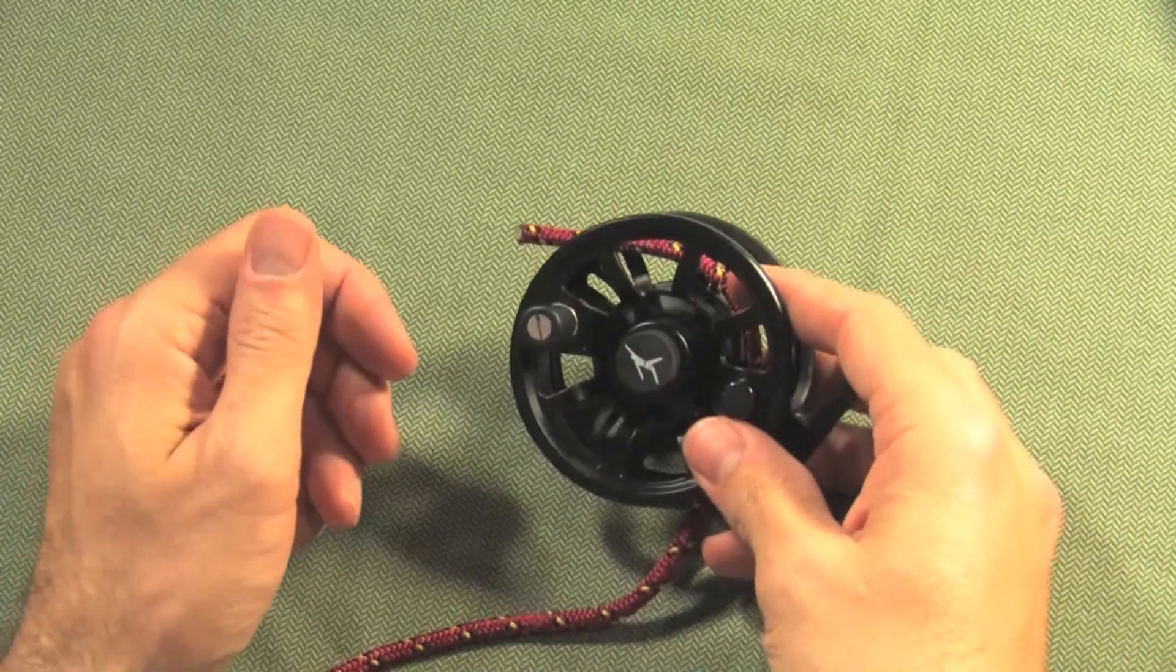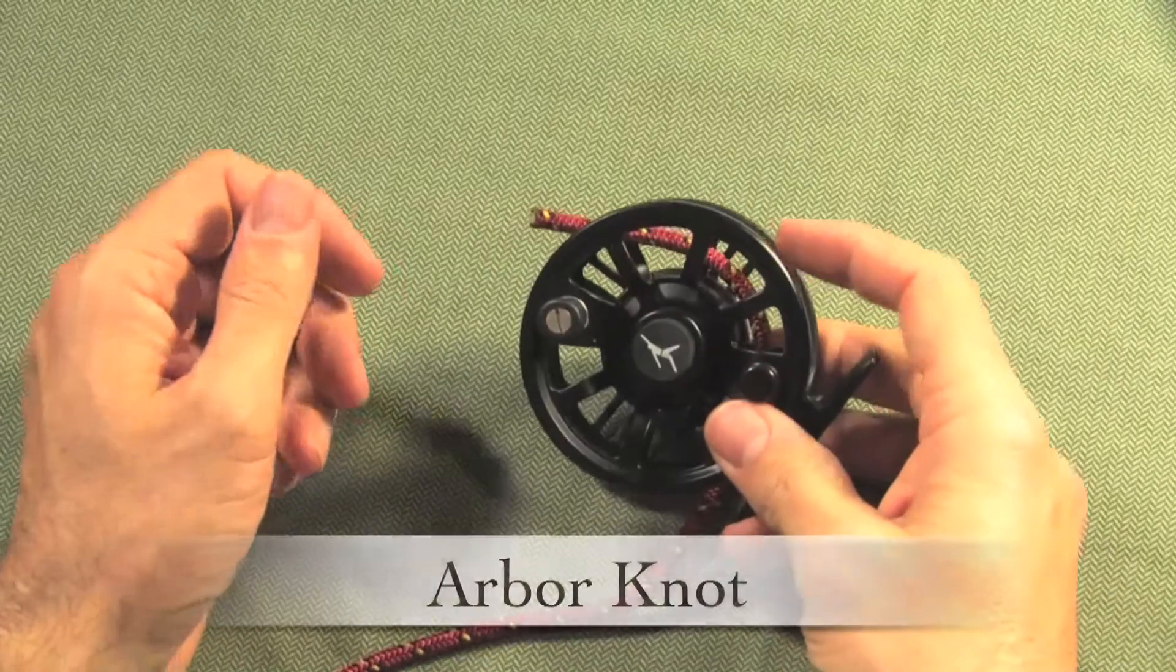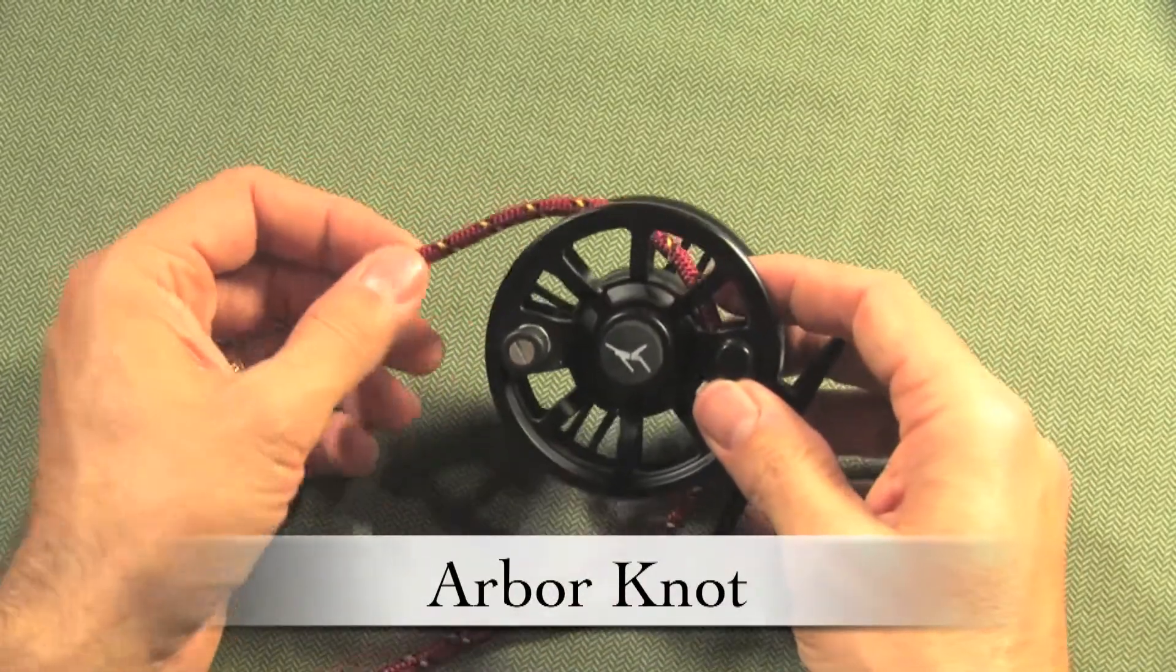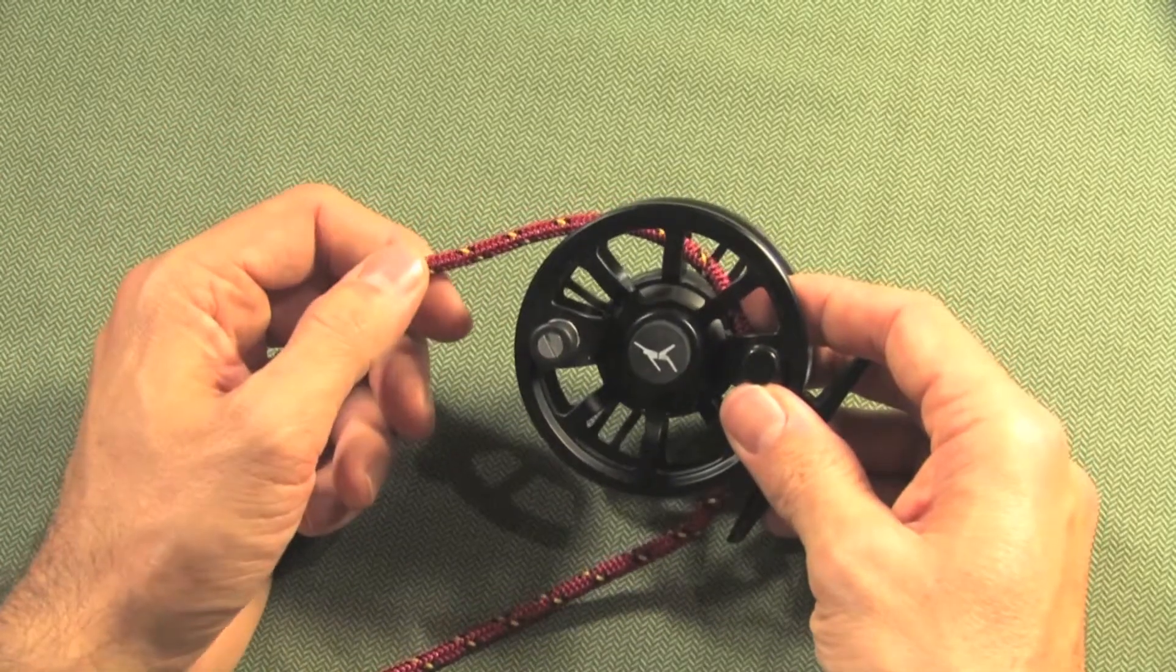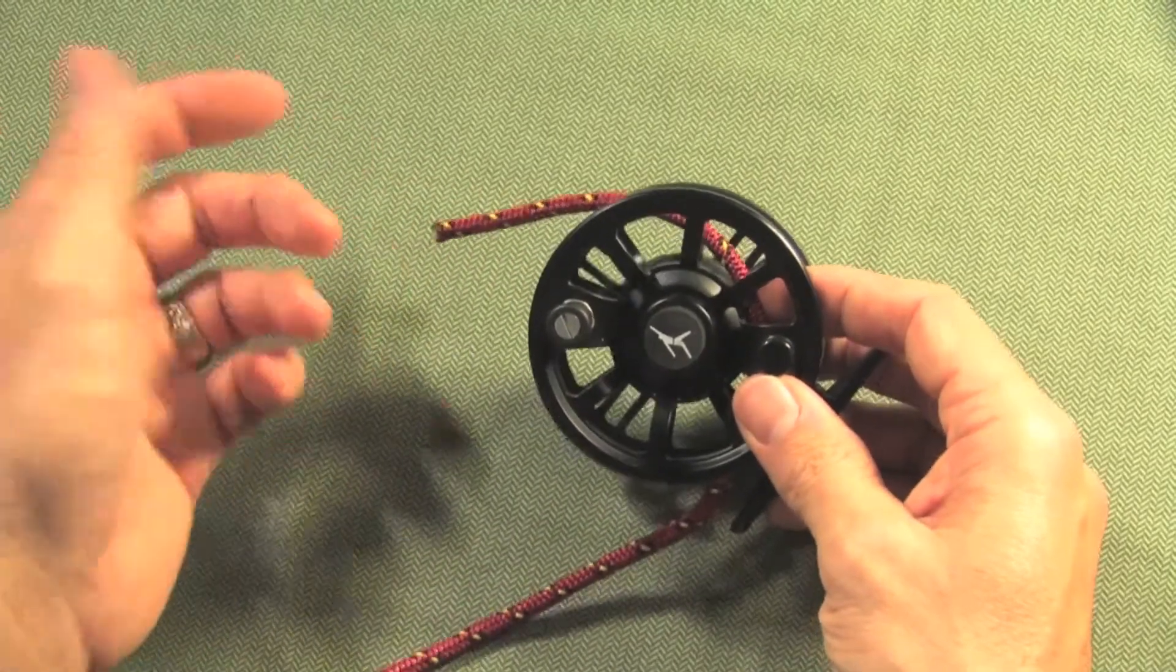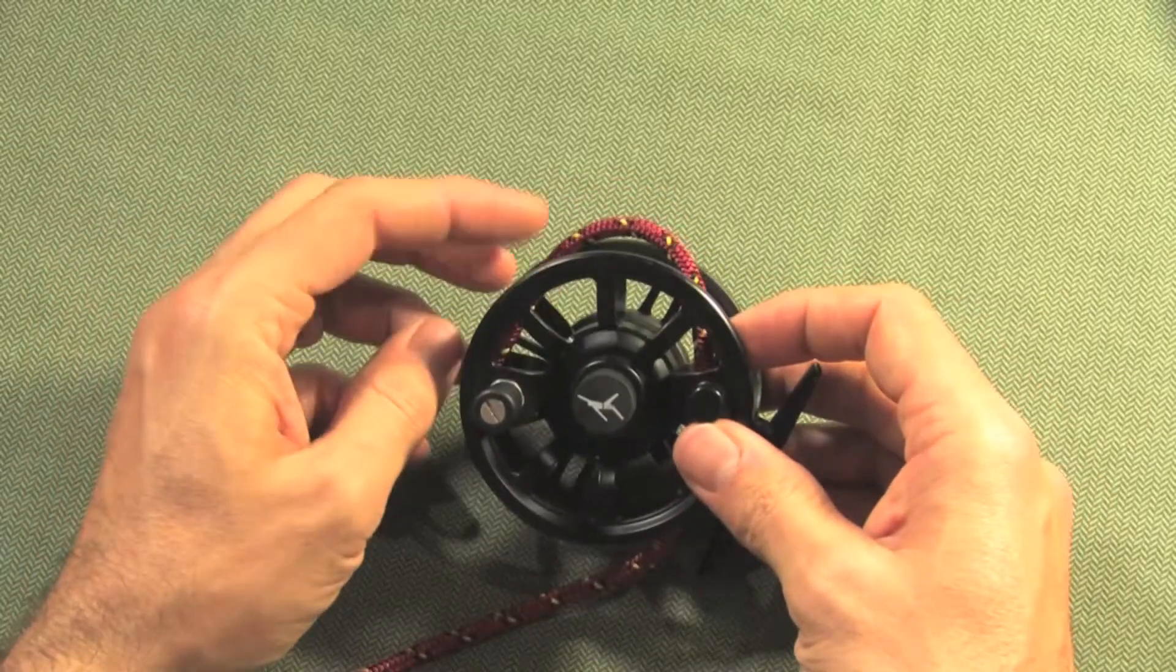Use the arbor knot to attach your backing to your fly reel. In this demonstration, the fly reel is here and the backing is represented by the red cord, and I'm going to start